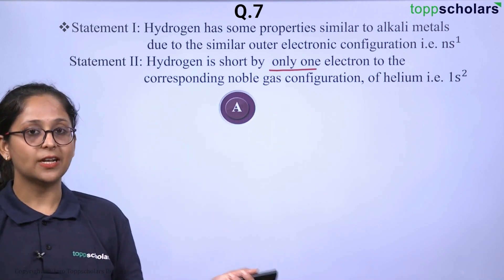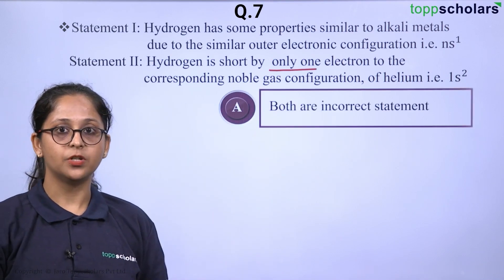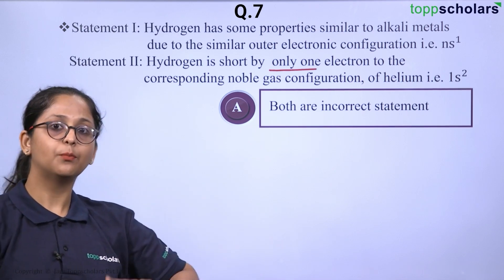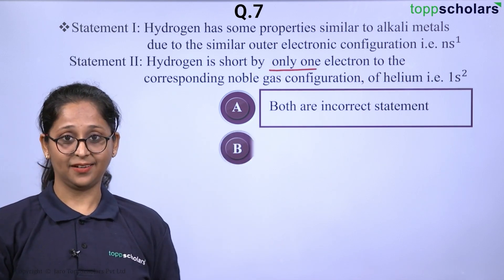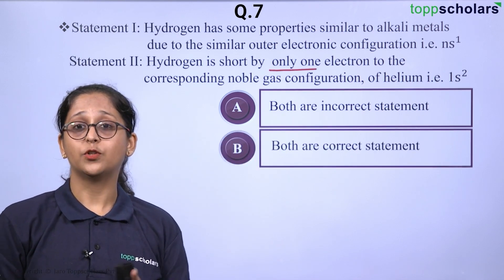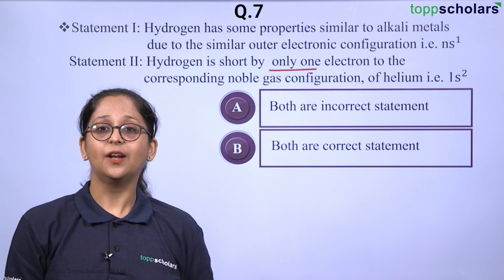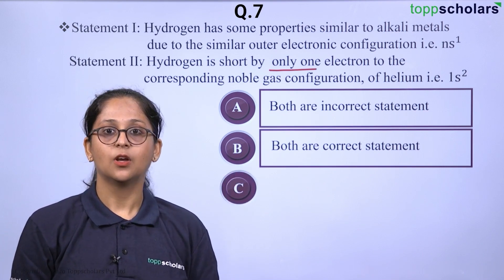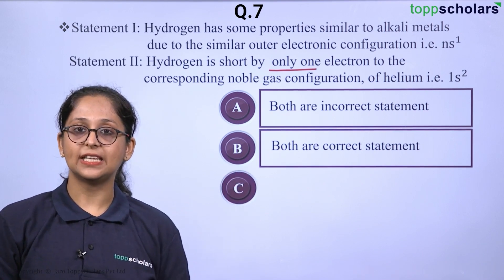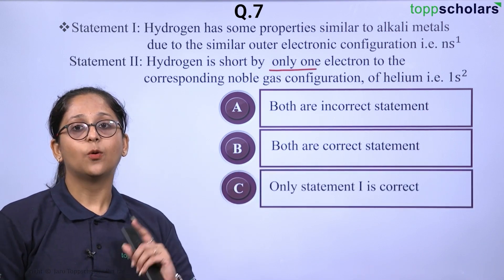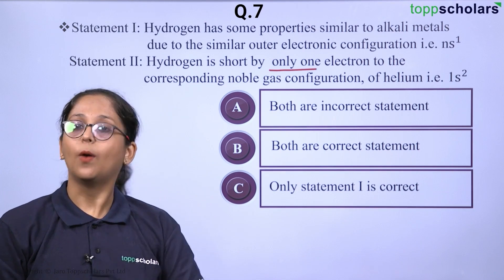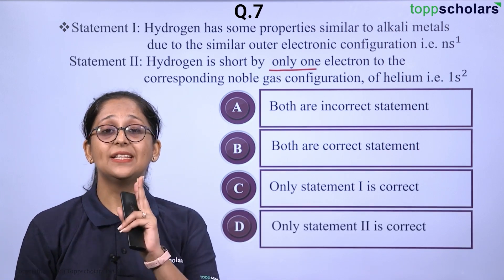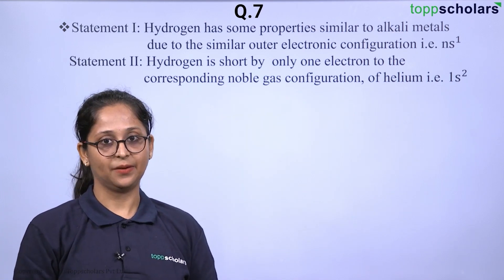Now let us look at our options. Option A says that both of the statements are incorrect. Option B says that both are correct statements. Option C says that only statement one is correct, and option D says that only statement two is correct.